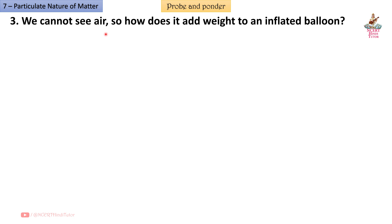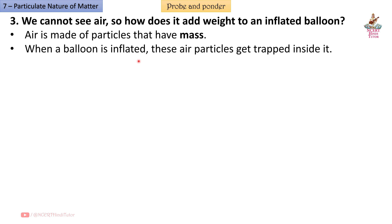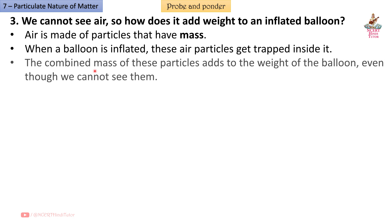Question 3: We cannot see air. So how does it add weight to an inflated balloon? Answer: Air is made of particles that have mass. When a balloon is inflated, these air particles get trapped inside it. The combined mass of these particles adds to the weight of the balloon, even though we cannot see them.